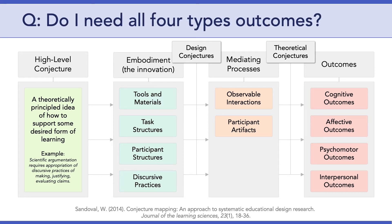The third question is: do I need all four types of outcomes? And the answer is no. You should only have the outcomes that are relevant to your study and the problem that you're trying to solve. Most of you will have cognitive outcomes focused on higher order skills, such as the ability to evaluate or create something — think of Bloom's taxonomy. In addition, many of you might have affective outcomes related to motivation, interests, and the values of participants. Far fewer of you will include psychomotor or interpersonal outcomes, but it is possible. In short, only include the outcomes that are relevant to your problem.